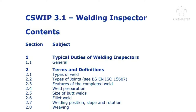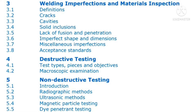In total we have 23 topics. The first one is typical duties of the welding inspector. The second is terms and definitions, which also has subtopics covering types of welds, types of joints, welding preparation, and size of butt welds. The third topic is welding inspection and material inspection.